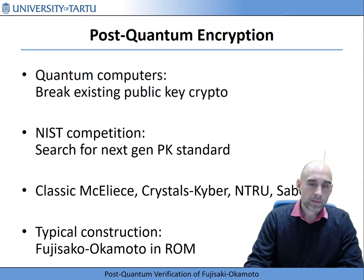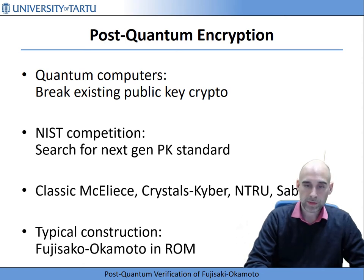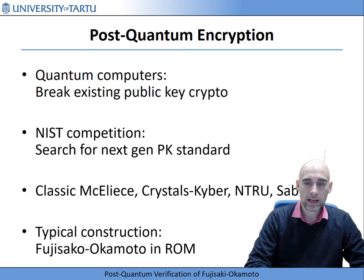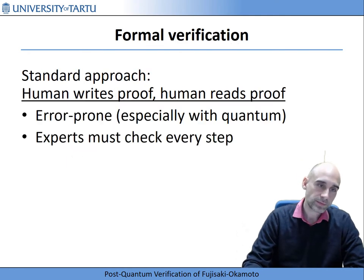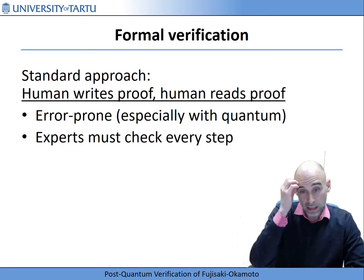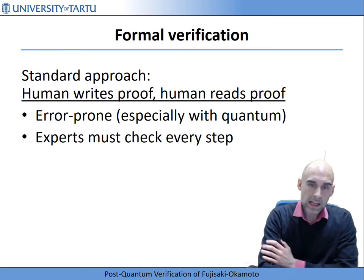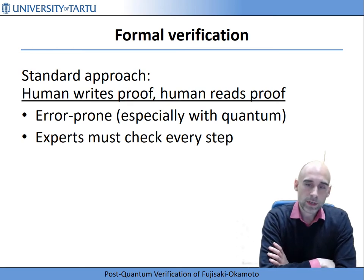This makes the Fujisaki-Okamoto transform, in all its different variants, a very important transformation. We need to be really sure that this transformation is secure and is post-quantum secure. And one approach to be really sure is formal verification.